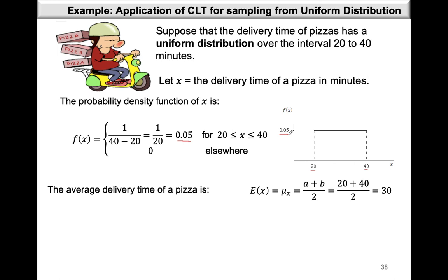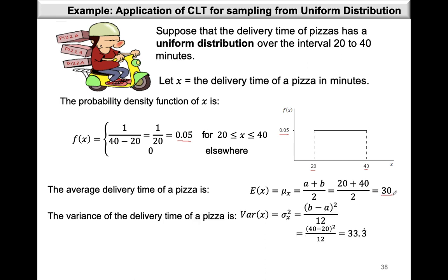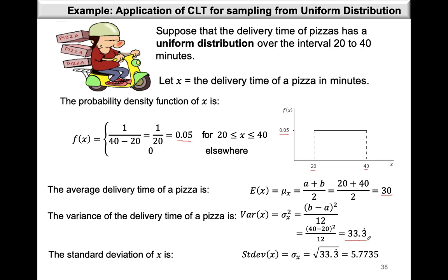We can calculate the average delivery time of a pizza using our formula. This will be (a + b) / 2, and we find that the average is 30 — this is the population average. Now the variance of the delivery time, sigma squared, is (b - a)² / 12, and when we plug in our values of b and a, we find that the variance is 33.3 recurring. From the variance, the standard deviation is obtained by taking the square root of 33.3, and we find that sigma x is 5.7735.